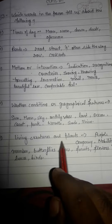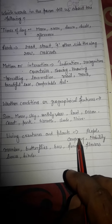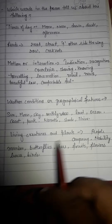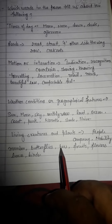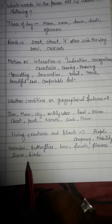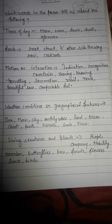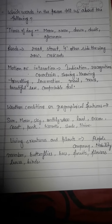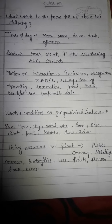Living creatures and plants: people, company, nobility, member, butterflies, bees, fruits, flowers, leaves, and birds. So these come under living creatures and plants.